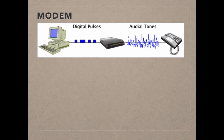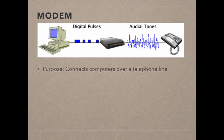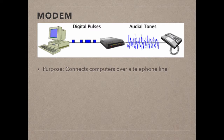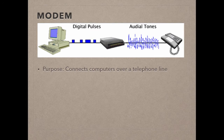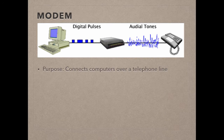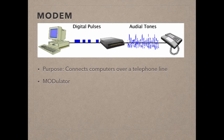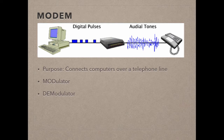A modem is a hardware device that enables a computer to send and receive information over telephone lines by converting the digital data used by your computer into an analogue signal used on phone lines, and then converting it back to digital once received on the other end. Modem is short for modulator-demodulator — modulation is converting data to an analogue signal, whereas demodulation is converting an analogue signal back to data.